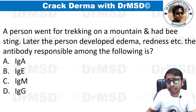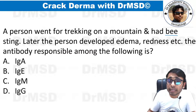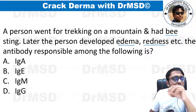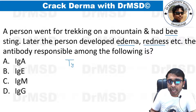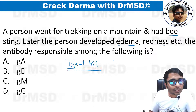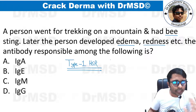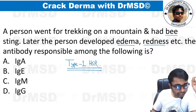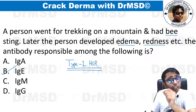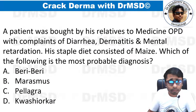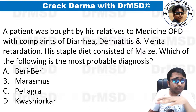A person went trekking in the mountains, was bitten by a bee, and later developed edema and redness. This picture looks like a type 1 hypersensitivity reaction. Examples include anaphylaxis and asthma, and the antibody associated is IgE — answer is option B.